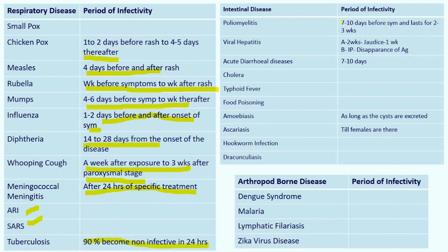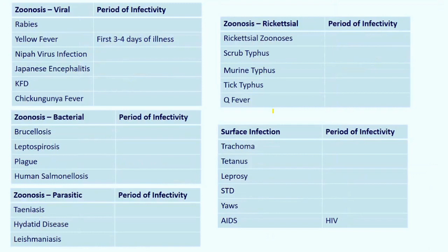Poliomyelitis: seven to ten days before symptoms appear and lasts two to three weeks. Viral hepatitis A: two weeks before appearance of jaundice and one week after. Hepatitis B: during incubation period to disappearance of antigen in blood. Acute diarrheal diseases: period of infectivity is the seven days around symptoms. Amoebiasis: as long as cysts are excreted. Ascariasis and hookworm: till females are present, eggs will be laid daily. For yellow fever only, the first three to four days of illness are infective; but for quarantine purposes, it will be 10 days at the airport.